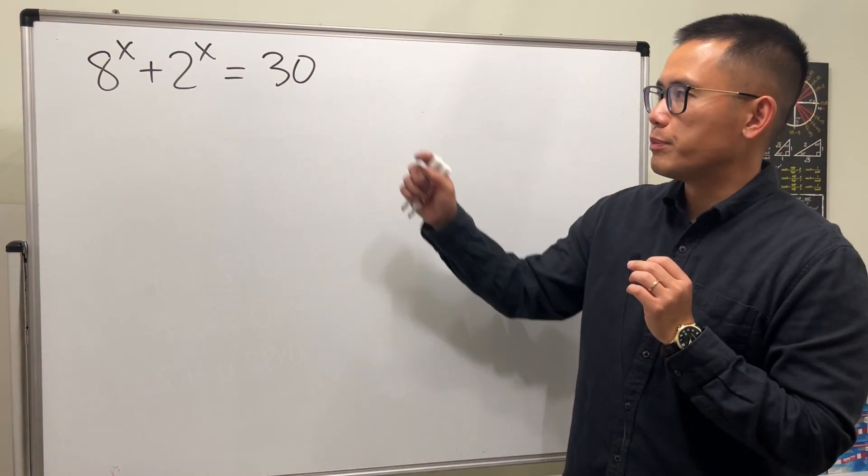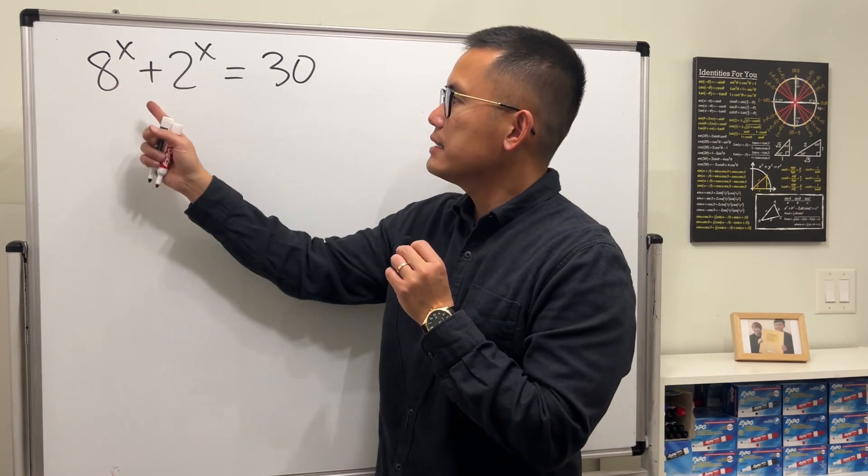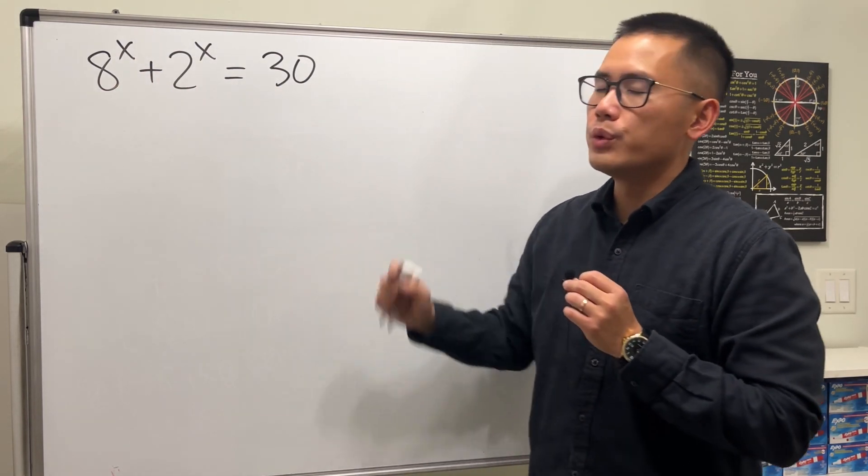Today, let's see how we can solve this exponential equation with two different bases. We have 8 to the x plus 2 to the x, and that's equal to 30.